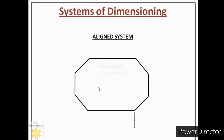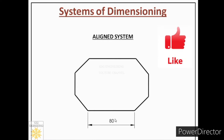First, we draw extension lines from the two points by leaving a one-millimeter gap, as learned in the starting slides. Then we draw a dimension line, followed by closed-field arrowheads on both sides. In the aligned system, we place dimensions above the dimension line and at the middle of the dimension line. This is a very important rule: dimensions must be above the line and at the middle of the dimension line.